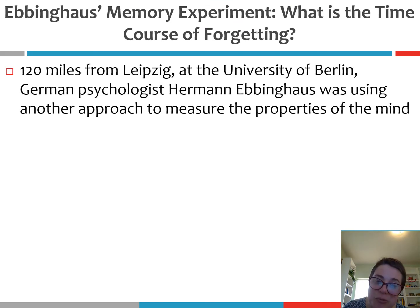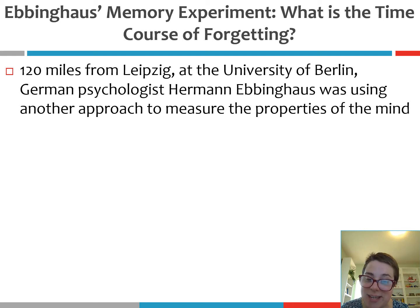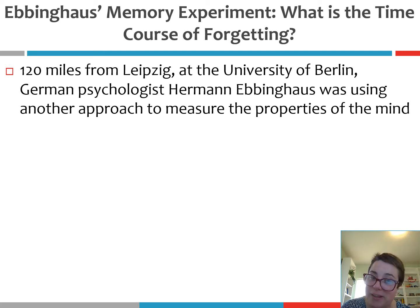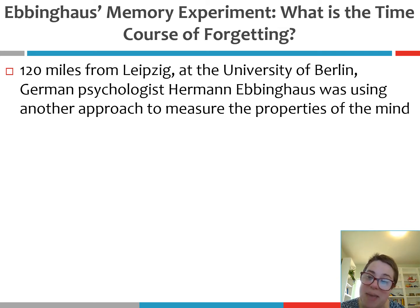So who was Ebbinghaus? About 120 miles from Leipzig — and Leipzig is significant because the University of Leipzig was where the first ever psychological research study was conducted by Wilhelm Wundt, who we'll talk about in our next video on structuralism — at the University of Berlin, German psychologist Hermann Ebbinghaus was using another approach to properly measure properties of the mind. Just as Francis Donders used reaction time experiments to make inferences about mental processes like decision-making, Ebbinghaus was also looking at behavior as a means to make inferences about a mental process — in this case, memory.